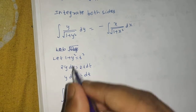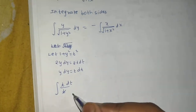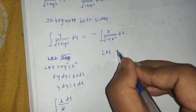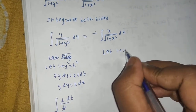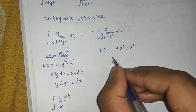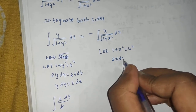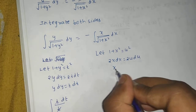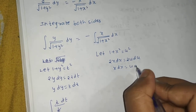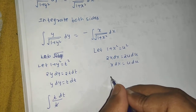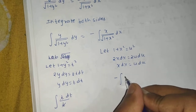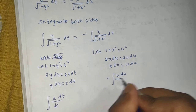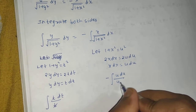For the right-hand integral, let 1+x² = u². Then 2x dx = 2u du, so x dx = u du. The integral converts to minus the integral of u du divided by √(u²), which is u, so the integrand also simplifies to du.